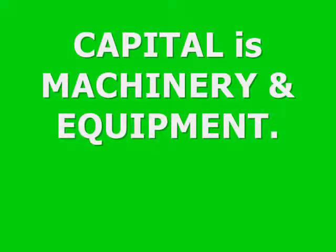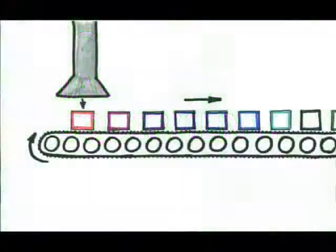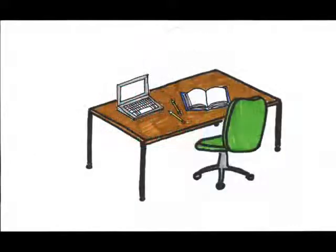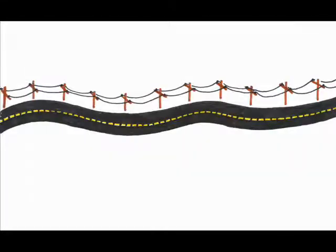More simply, capital is machinery and equipment. This includes factory machinery, but also the factory itself, computers, furnishings, books, roads, phone lines, etc.